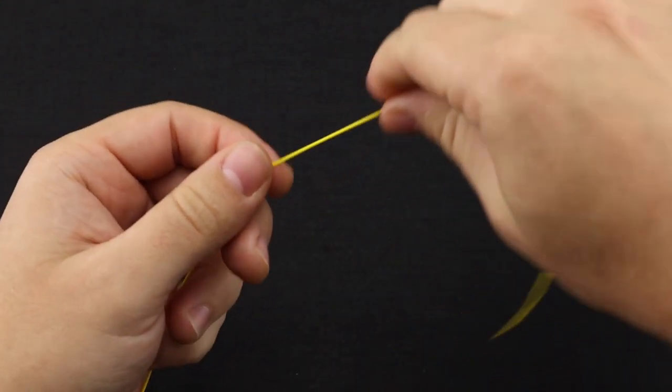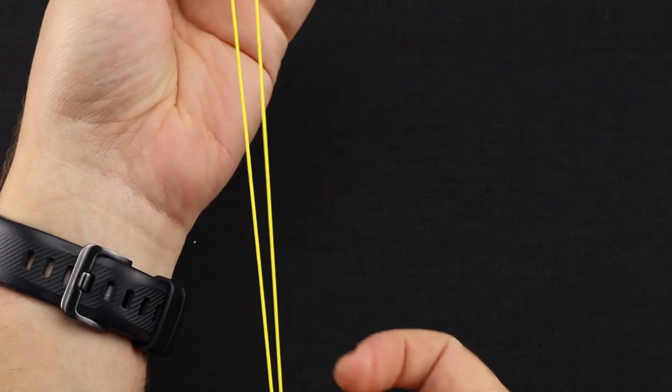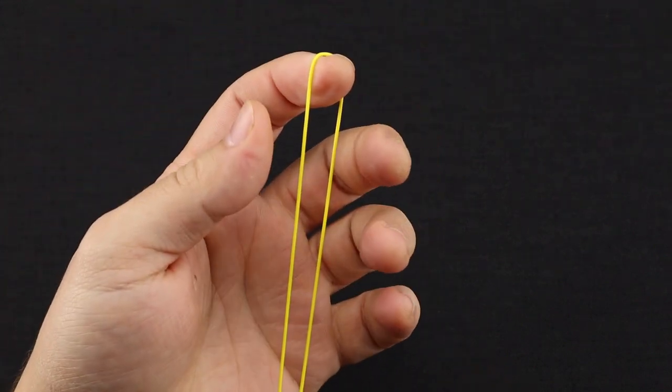Alright, so with your line, you're going to want to double that over. I like to use about 8 to 10 inches of doubled over line.